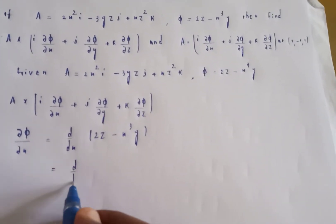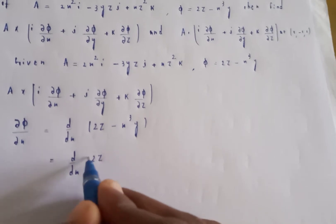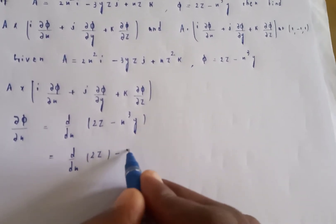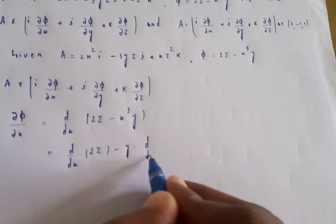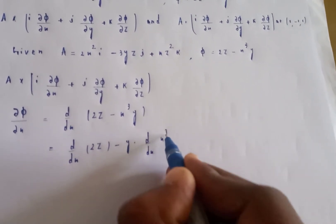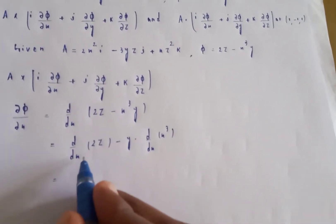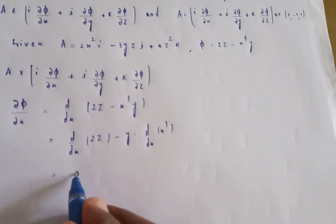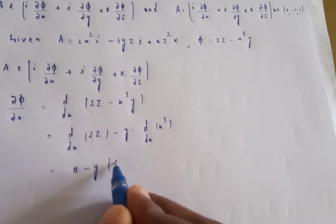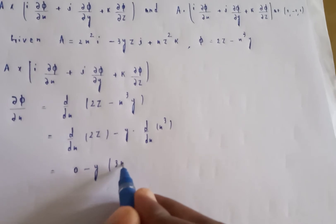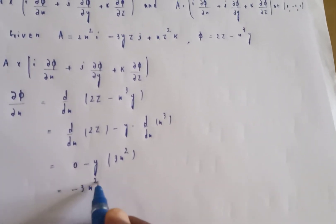d/dx of 2z: since z is constant with respect to x, this gives 0. Then d/dx of x³ gives 3x², so the result is minus 3x²y. Therefore ∂φ/∂x equals minus 3x²y.